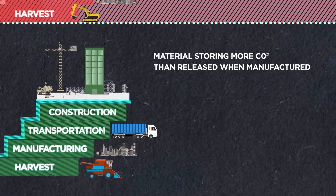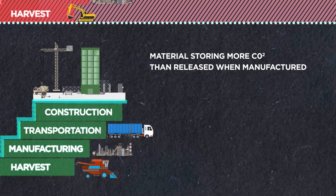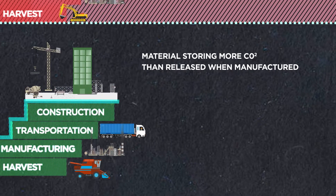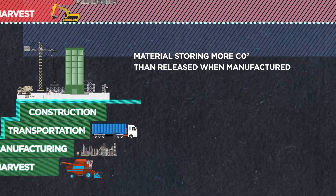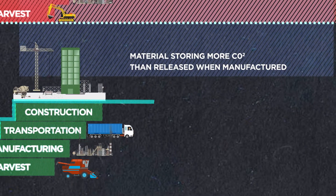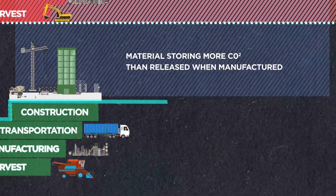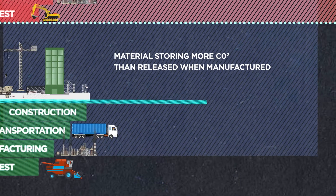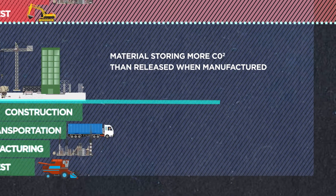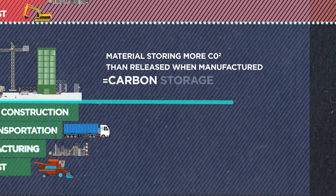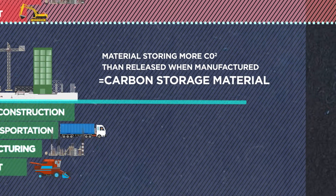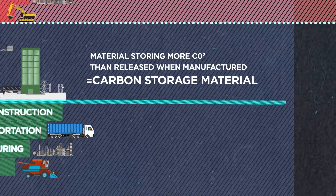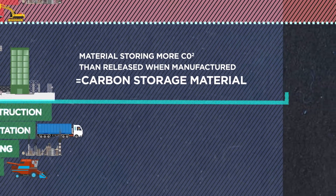So by the time that building is in use, that material is storing more carbon than it has released back into the atmosphere. Let's assume the building lasts 60 years. That whole time, the material is storing CO2 it removed from our atmosphere, which is why we call it a carbon storage material.